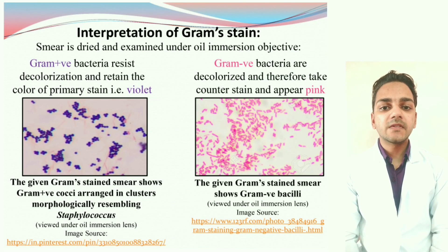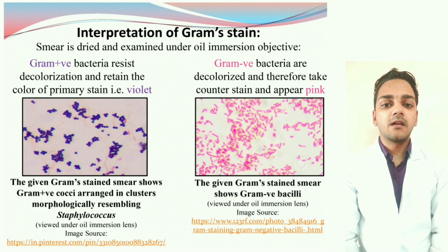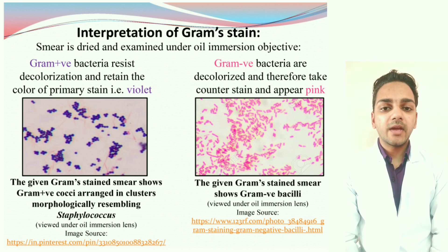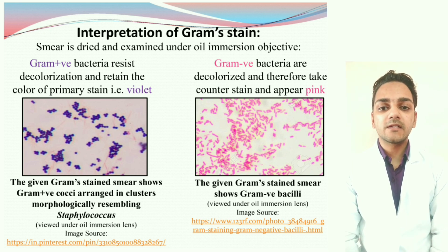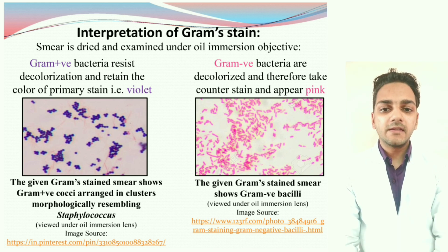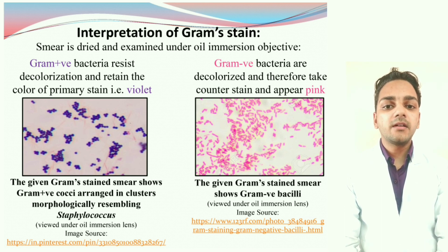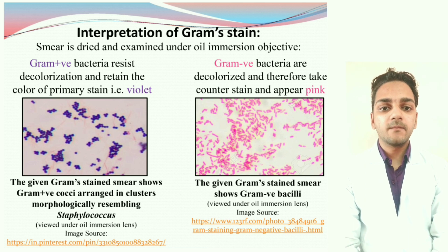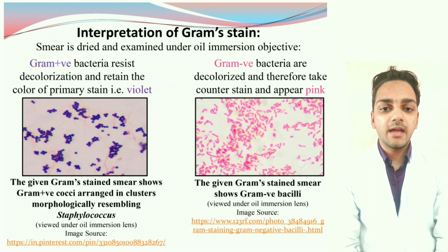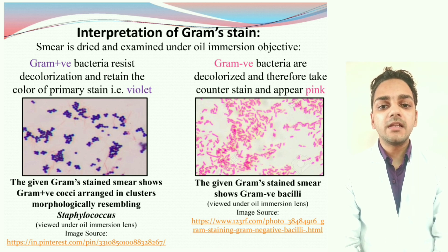For doing interpretation of the Gram stain, firstly we dry the slide, put a drop of cedar wood oil, and examine it under the oil immersion lens. On examination, we find that Gram-positive bacteria resist the decolorization and appear as violet. On the other hand, Gram-negative bacteria decolorize and lose their primary stain and take up the counter-stain, thus appearing as pink. By examining the Gram reactivity, morphology, and arrangement of bacteria, a microbiologist has to report these features. For example, as we can see in the left image, the Gram-positive cocci are arranged in clusters, so we report: 'The given Gram stain smear shows Gram-positive cocci arranged in clusters, morphologically resembling Staphylococcus.'